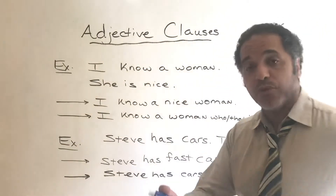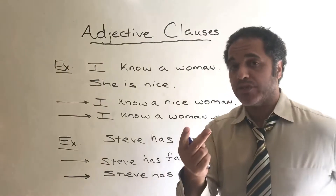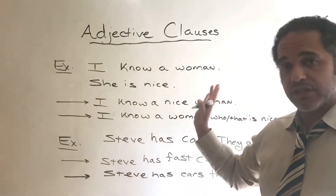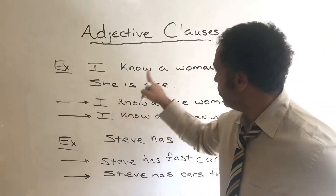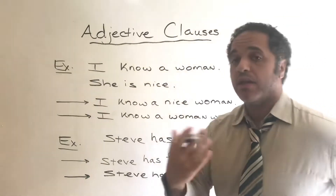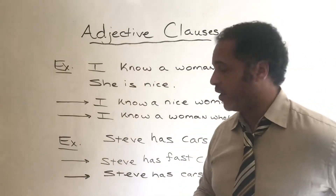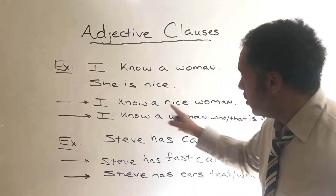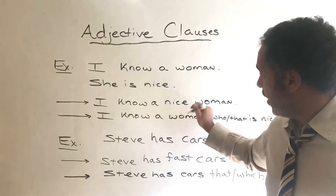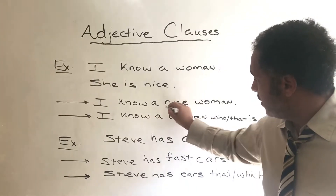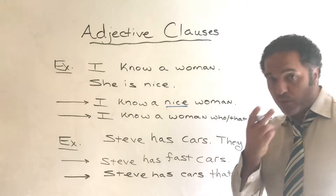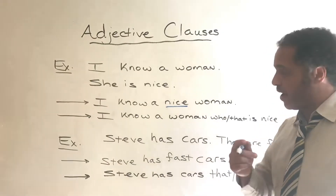It's perfectly okay to have two separate sentences — grammatically everything is fine here. When we say 'she,' we are talking about the woman, but there are other ways we can write it as well. You can just use an adjective: 'I know a nice woman.' That's a different way to write or say it.